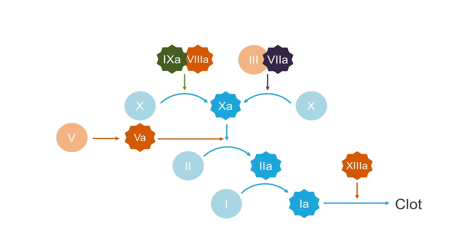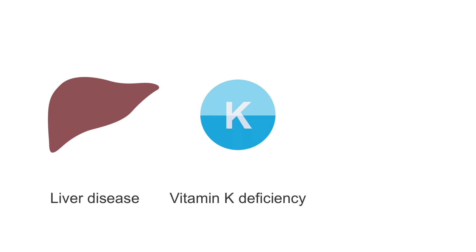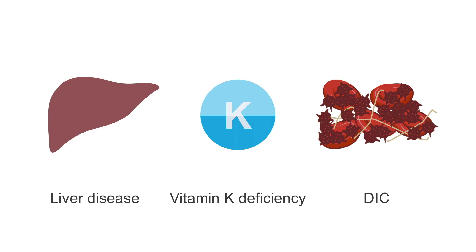If an individual has both PT and PTT prolonged, we may be dealing with deficiency of factors in the common pathway or deficiency of factors in both pathways. Examples of such conditions include liver disease, vitamin K deficiency, or disseminated intravascular coagulation, also known as DIC.